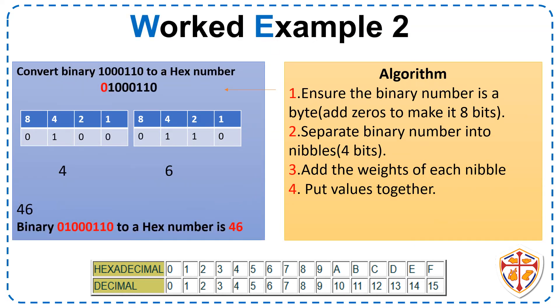Worked Example 2. Question 2. Convert binary 1001110 to a hex number. Let us follow the algorithm. Step 1. Ensure the binary number is a byte. Add zeros to make it 8 bits. So we are given 7 bits. We add one zero. Now we have 8 bits.